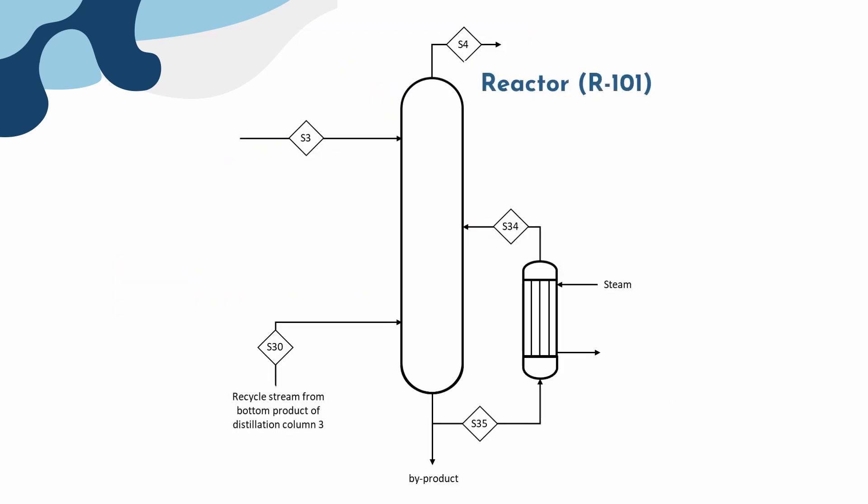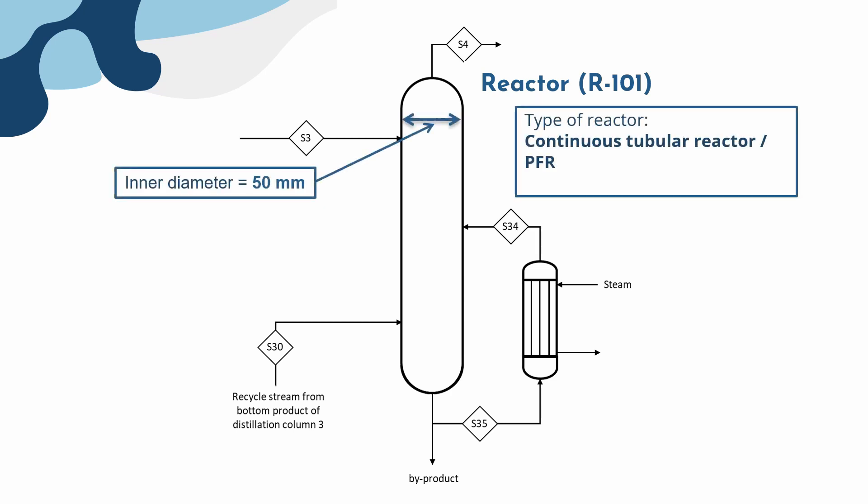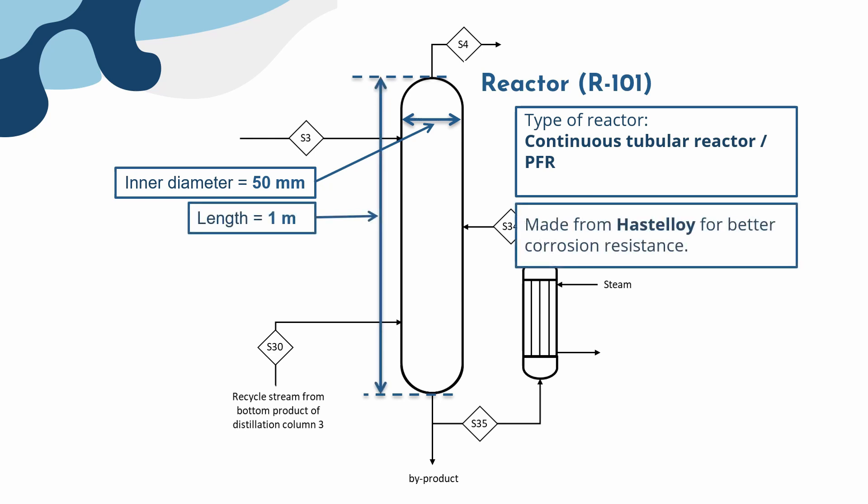The raw materials then went into the continuous tubular reactor or PFR with dimension of 50 mm inner diameter and 1 m of length. The reactor is made from hastelloy, a corrosion-resistant nickel alloy that contains other chemical elements such as chromium and molybdenum for better corrosion resistance.